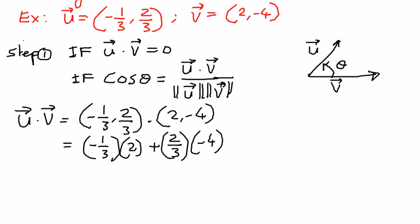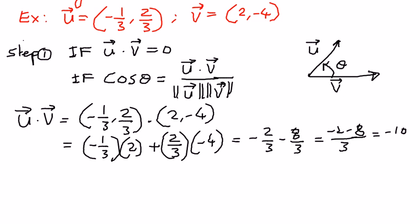When we simplify this, we get negative 2 over 3 minus 8 over 3. The common denominator is 3, giving us negative 2 plus negative 8, therefore this is going to be negative 10 over 3. The dot product of these two vectors did not go to 0, therefore these two vectors are not perpendicular to one another.